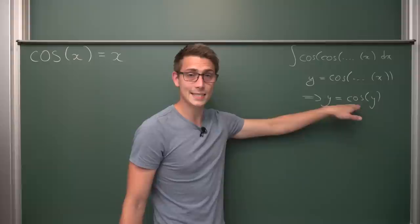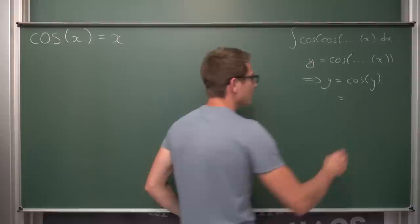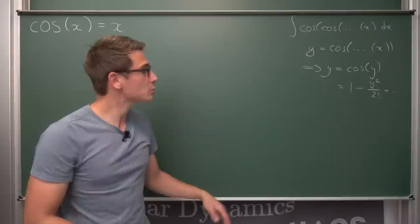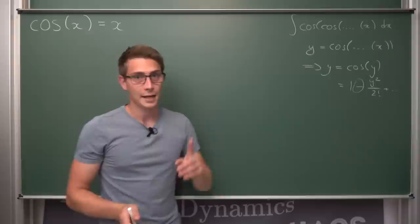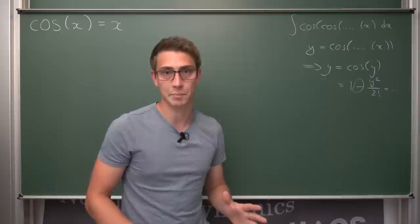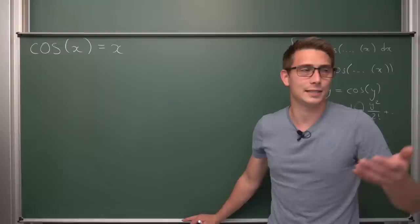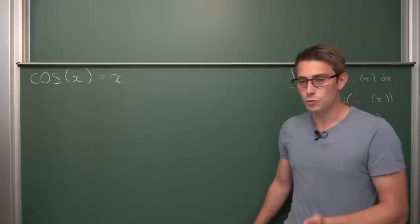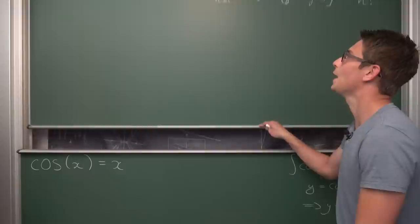In the previous video I said it's pretty surprising that a constant exists which satisfies this fixed-point equation. It's unusual because if you look at the Taylor series of cosine of y — which is 1 minus y² over 2! plus higher powers — there's no linear y term on the right, yet y appears on the left. It's pretty surprising that this fixed-point equation has a solution, and that solution is called Dottie's number, which we're going to calculate today by finding a closed expression.